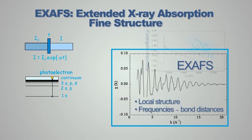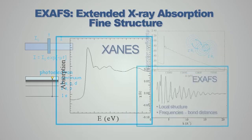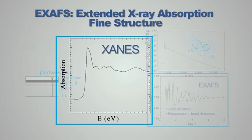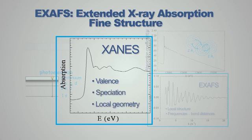One can also look at the structure near the edge through the so-called XANES signal. XANES stands for X-ray Absorption Near Edge Spectroscopy, and provides information on the valence or the speciation of the absorber as well as its local geometry. I will now show you two examples of applications, both in the field of catalysis.